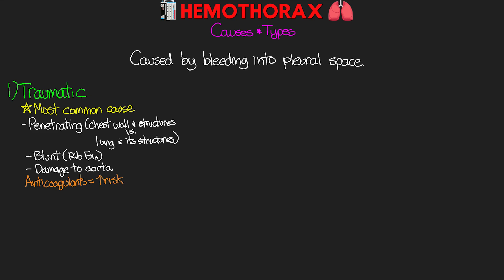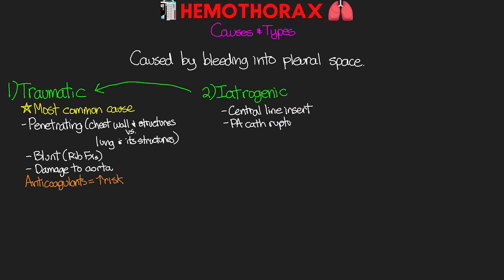Patients who are on anticoagulants are going to be at greater risk. Just like with our pneumothoraces, we also have iatrogenic causes, which are also considered types of traumatic events. These can include things like subclavian central line insertion, PA catheter rupture of the pulmonary artery, lung biopsies, surgery, and CPR, just to name a few.